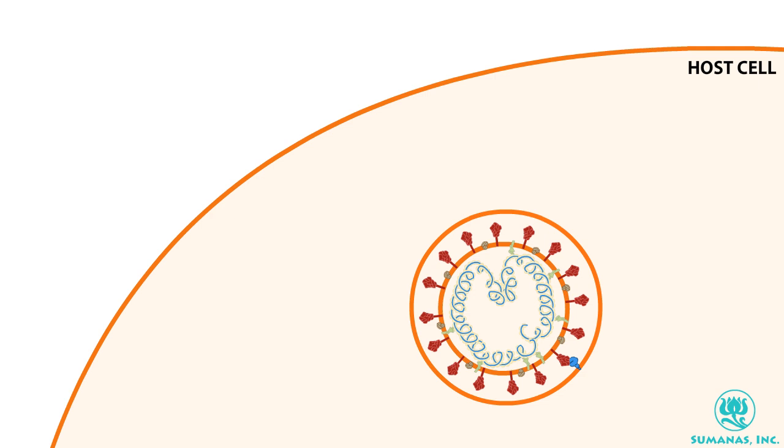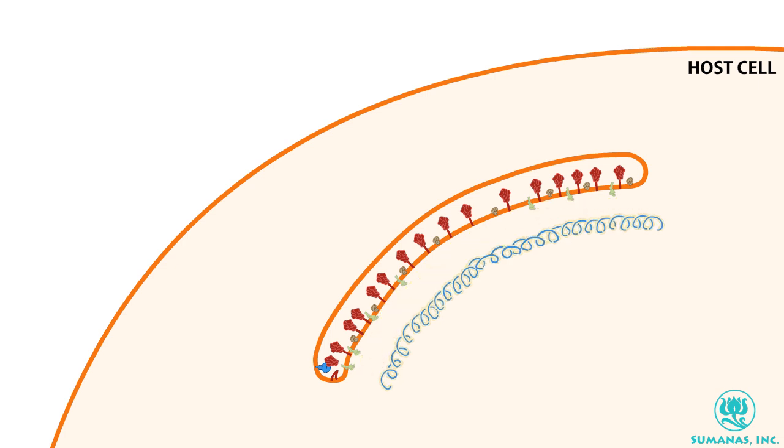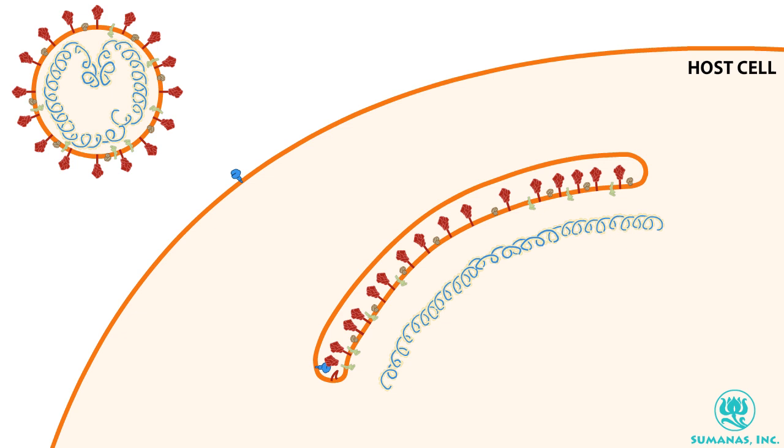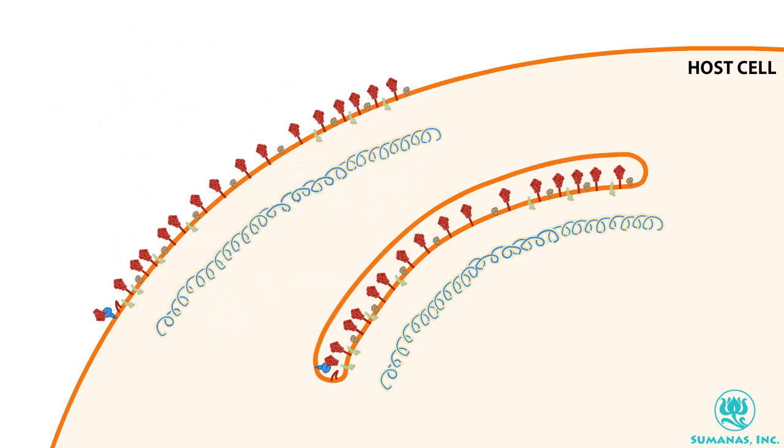Cleavage of the spike protein triggers the viral and host membranes to fuse together. The viral RNA now enters the host cell. SARS-CoV-2 may also get in by fusing directly with the cell membrane, depositing its RNA genome directly into the cytoplasm.